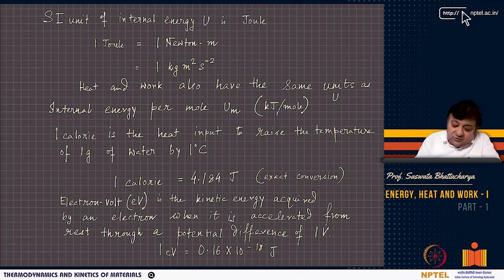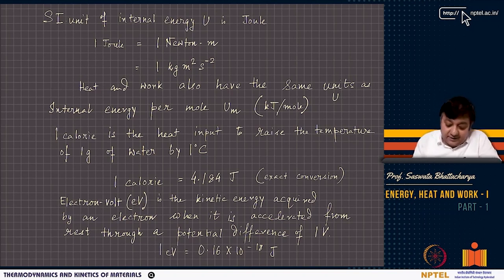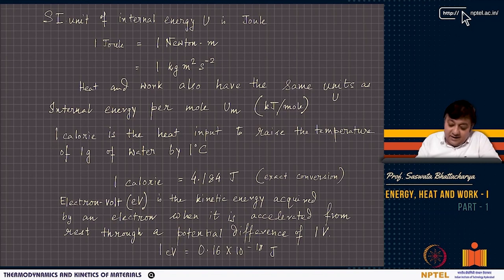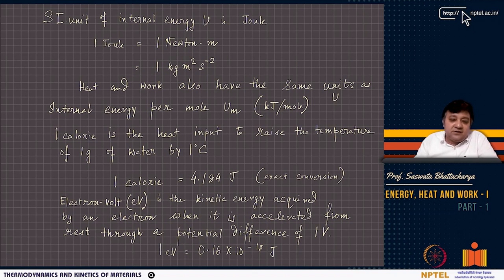So 1 Newton-meter is 1 joule, and 1 Newton is 1 kg·m²/s², which comes from Newton's law F = ma. Heat and work have the same unit as energy — joule. We will use SI units throughout, though problems sometimes use British units or CGS units.